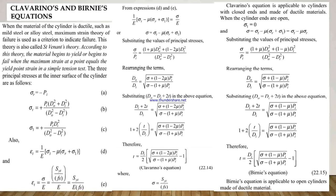For that, the three principal stresses at the inner surface of the cylinders are used. First, radial stress: sigma_r equals minus pi as equation A. Tangential stress: sigma_t equals pi times (do² + di²) divided by (do² - di²) as equation B. And sigma_l, longitudinal stress, equals pi times di² divided by (do² - di²) as equation C.